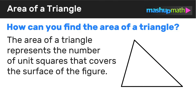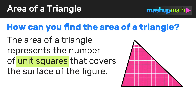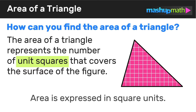The area of a triangle represents the number of unit squares that covers the surface of the figure. When we say unit squares, we mean how many unit squares it will take to cover the surface of the triangle. The unit square depends on what unit we're working with — whether square centimeters, square inches, or square meters. Area is always expressed in square units.